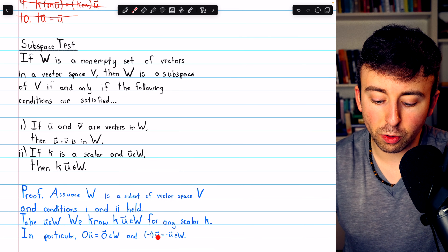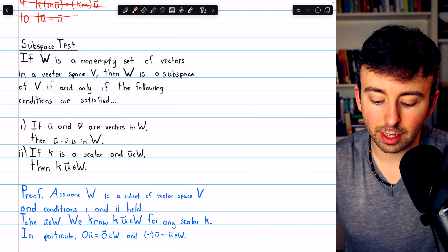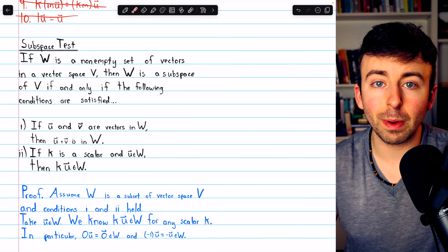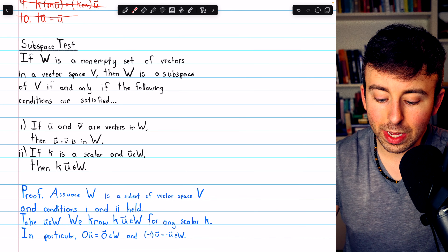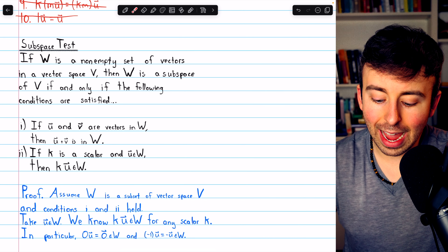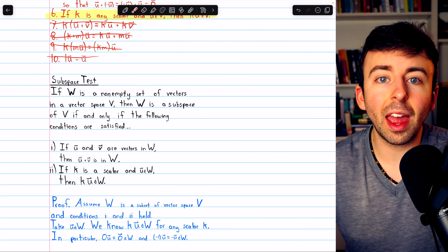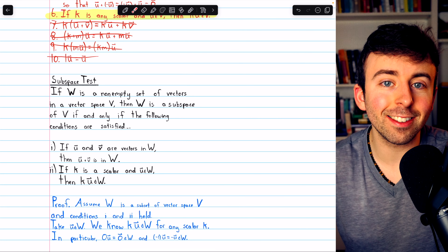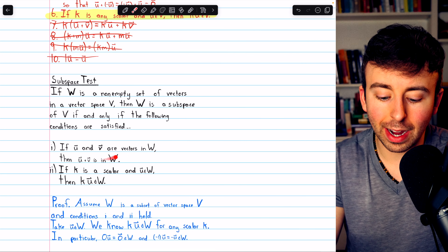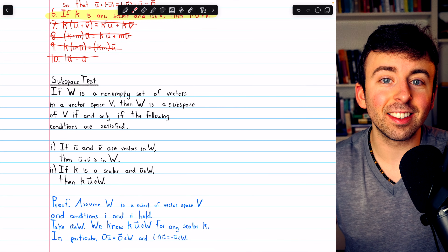Similarly, if we have the arbitrary vector U, we could multiply it by the scalar negative 1. That must also be in W because W is closed under scalar multiplication. Multiplying a vector by negative 1 gives the negative of the vector. Thus W must contain the zero vector and negatives, giving us axioms 4 and 5. So all we have to check is that W is non-empty and closed with respect to vector addition and scalar multiplication — if we can prove those things, it's a subspace.